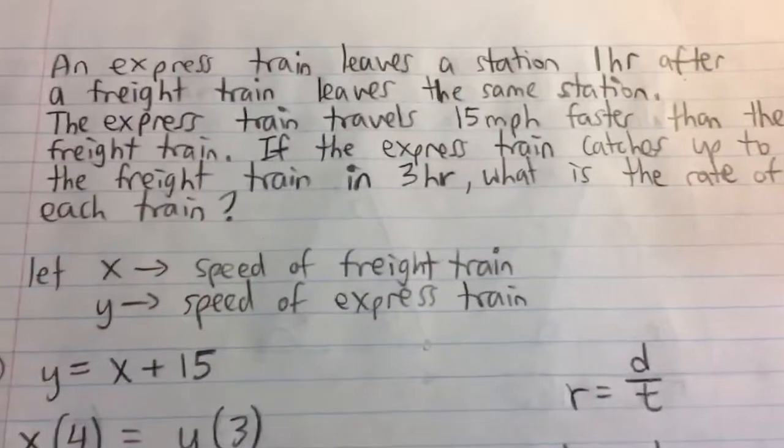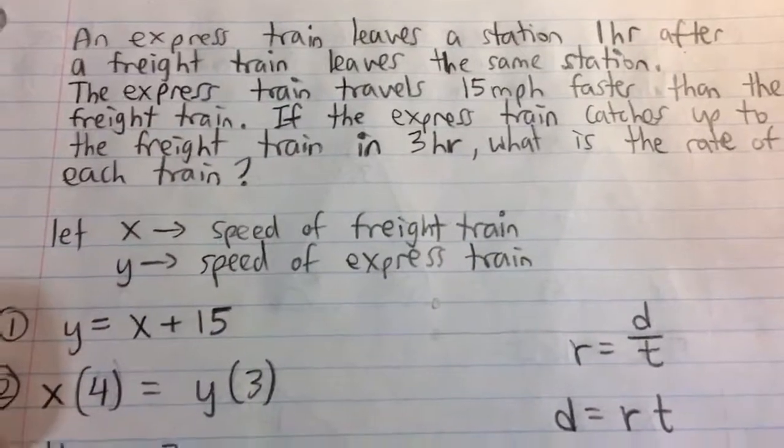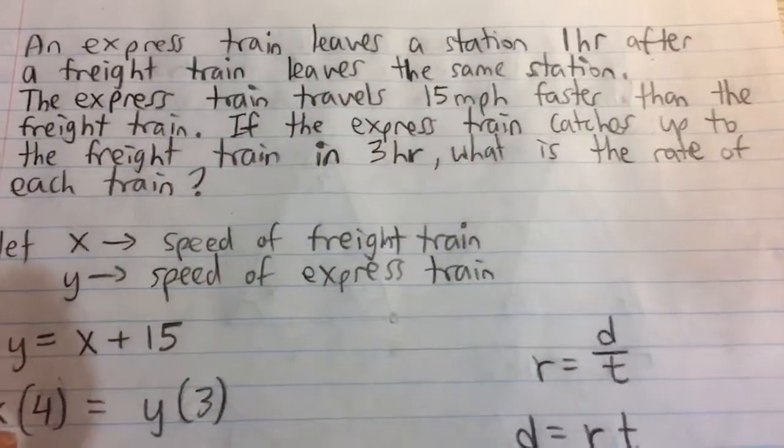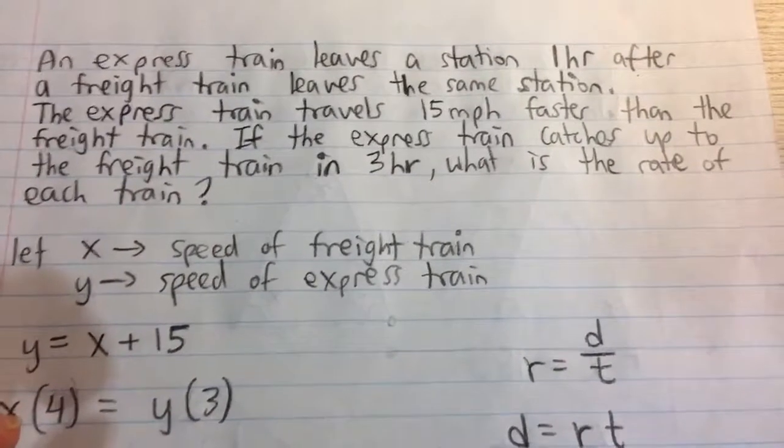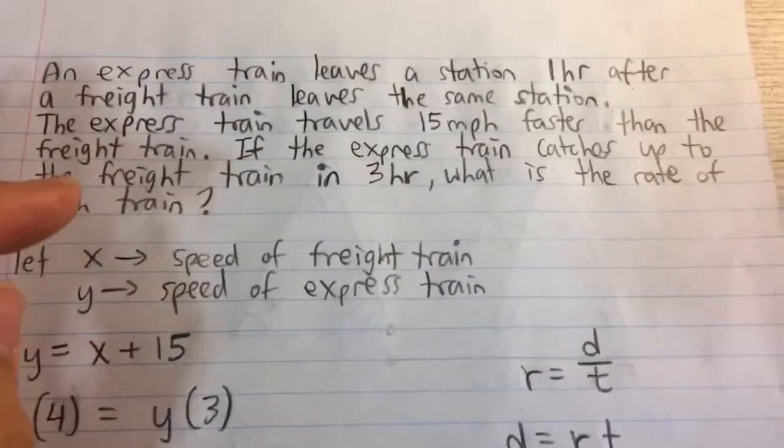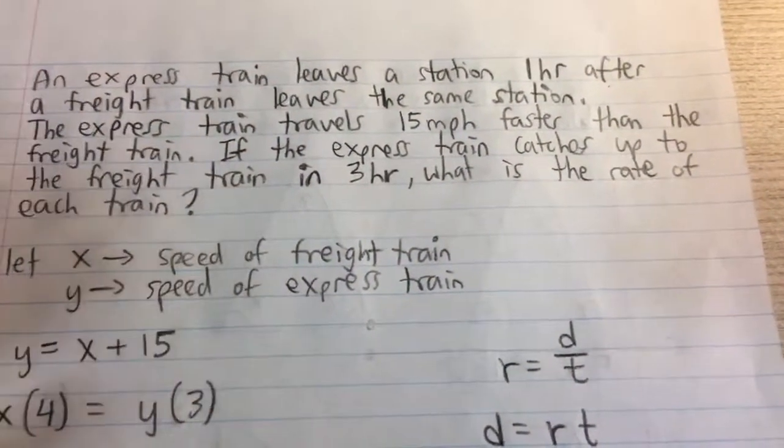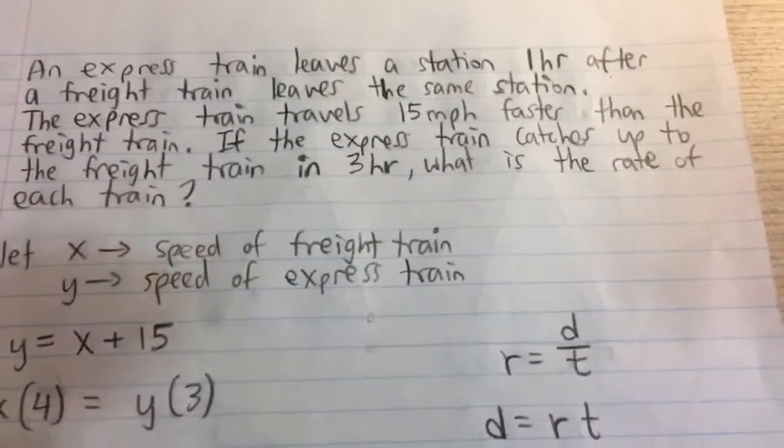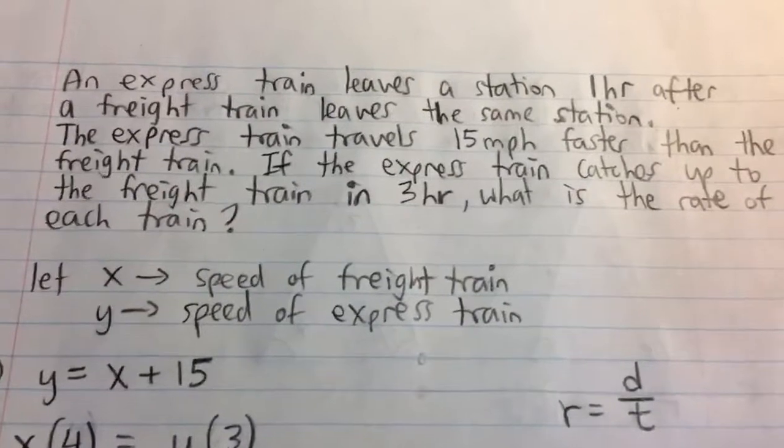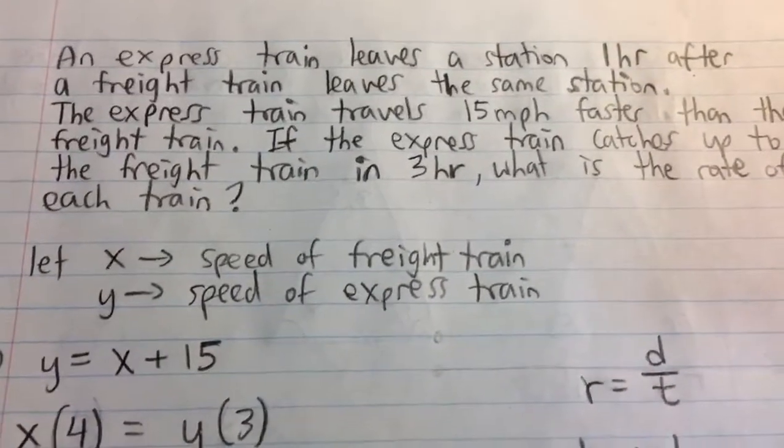So let's think about the situation. The first train, the freight train, is slower than the express train. It starts from the beginning, and the express train leaves later. But once the express starts, it goes faster. Eventually, because it's faster than the other train, it's going to catch up and finally meet the other train. They'll travel the same distance, and that's the key in this equation.